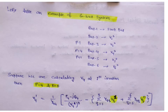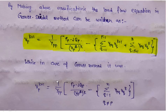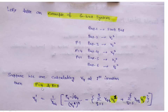Let's take an example of a 6-bus system. Bus number 1 is the slack bus. We are calculating v4 at the first iteration, meaning p equal to 4 and k equal to 0. Then we will calculate vp at the first iteration. If we put p equal to 4 and k equal to 0, we get v4 at iteration 1 equals 1 over y44 times [p4 minus j*q4 over v4 conjugate at iteration 0], where iteration 0 means the previous iteration values or initial values.